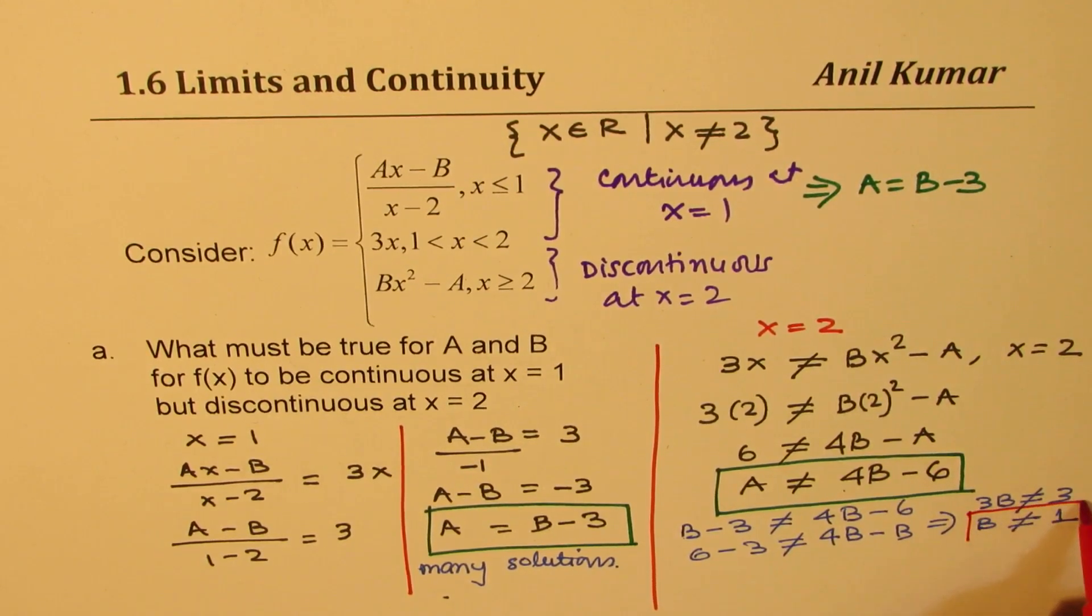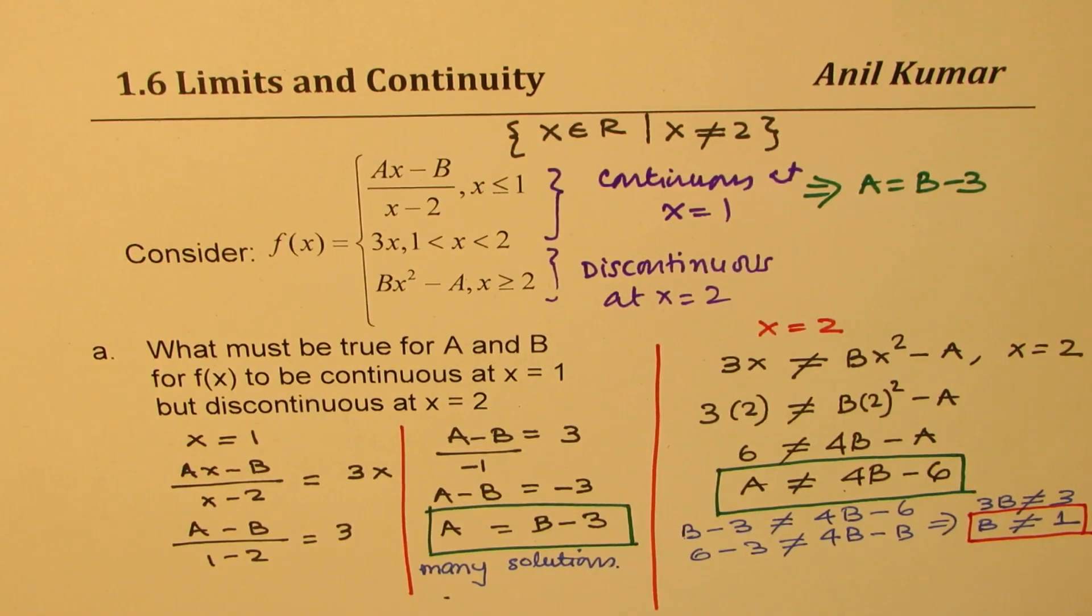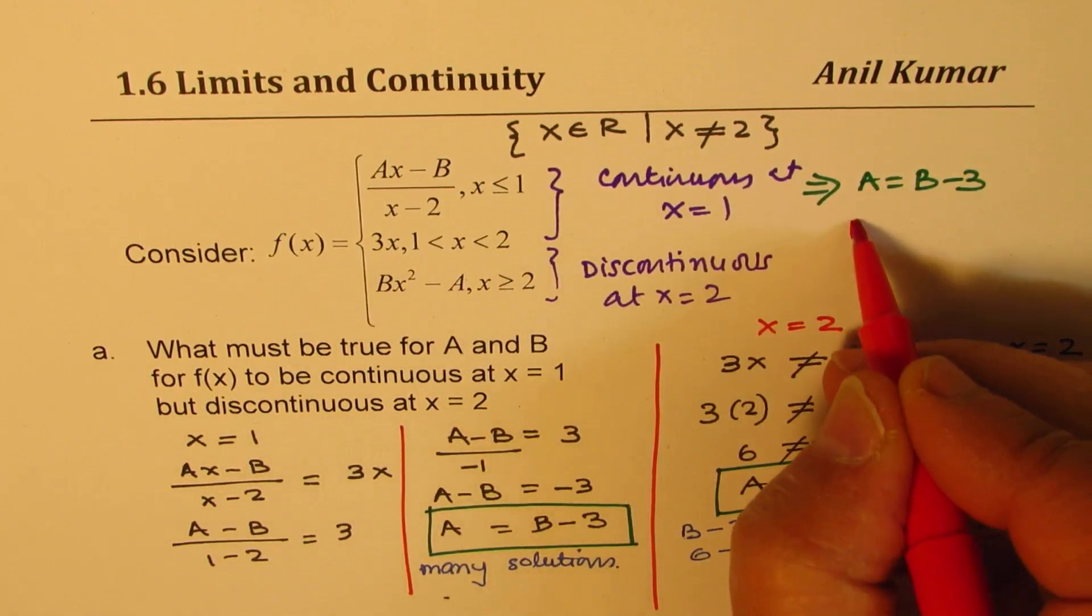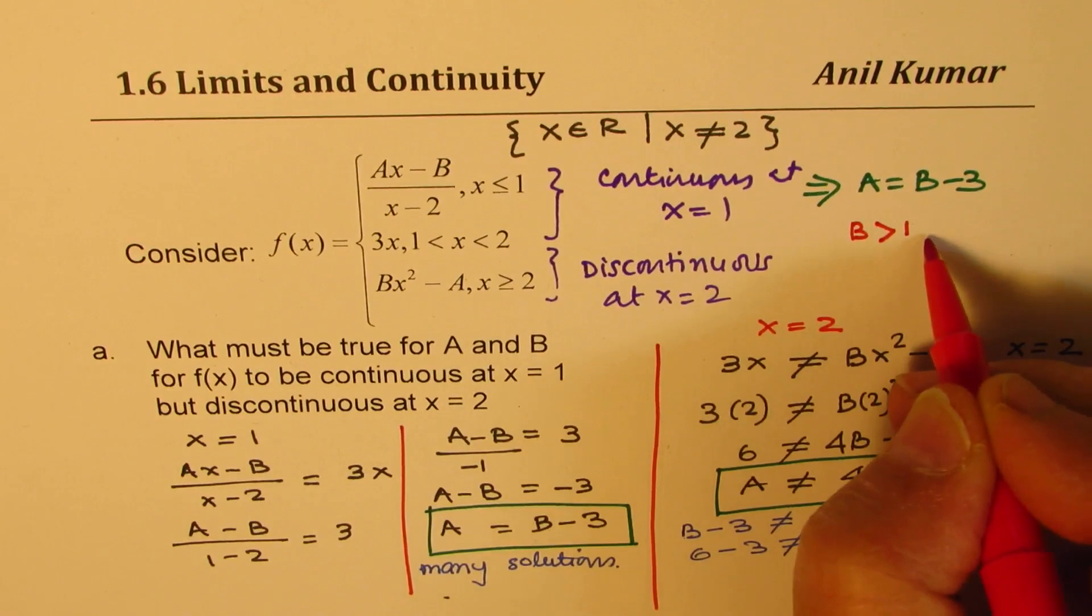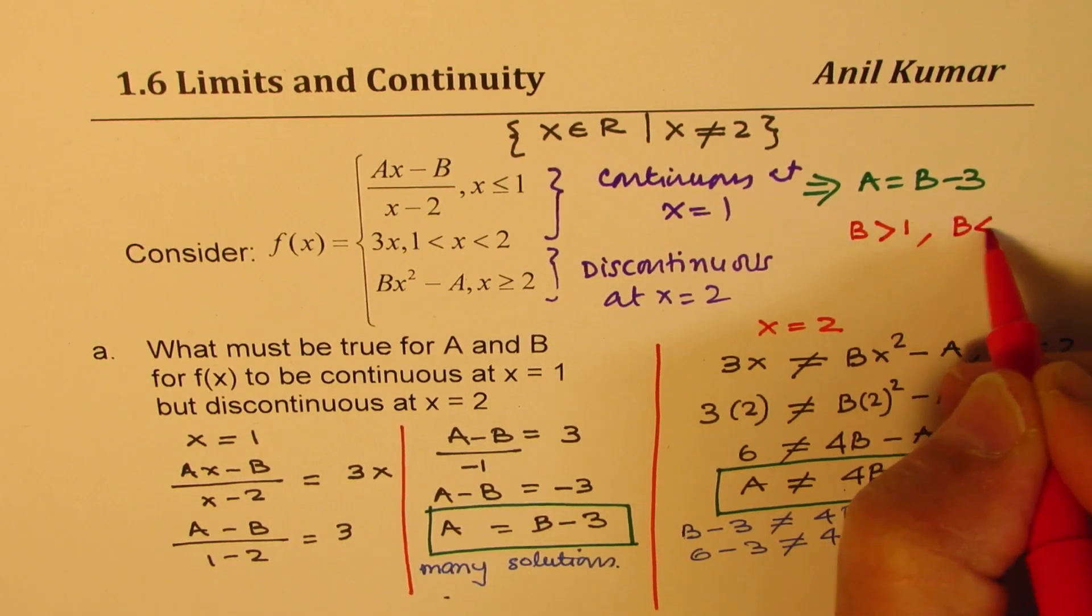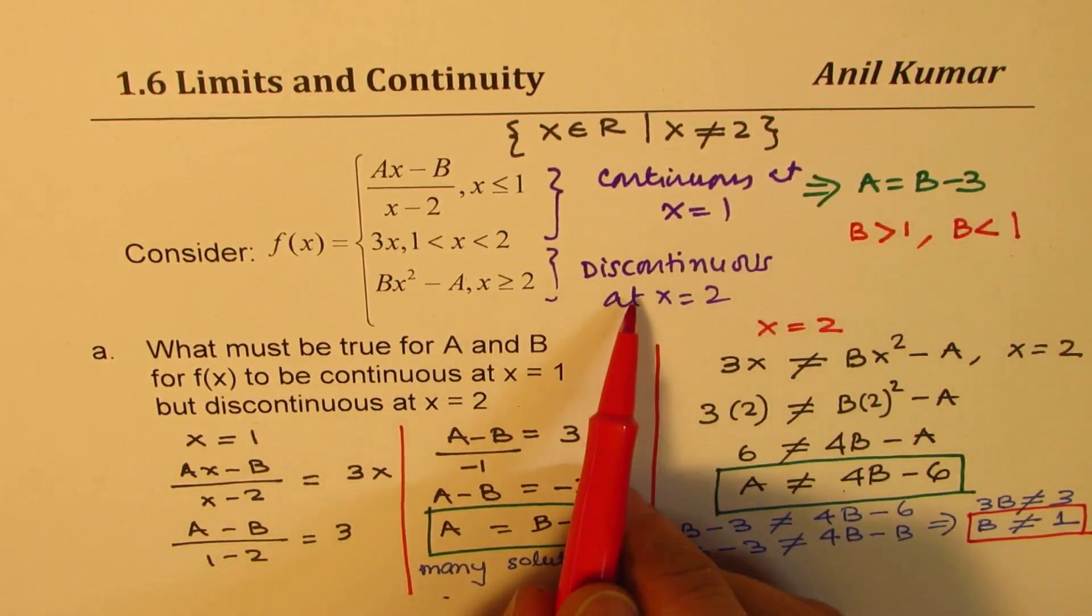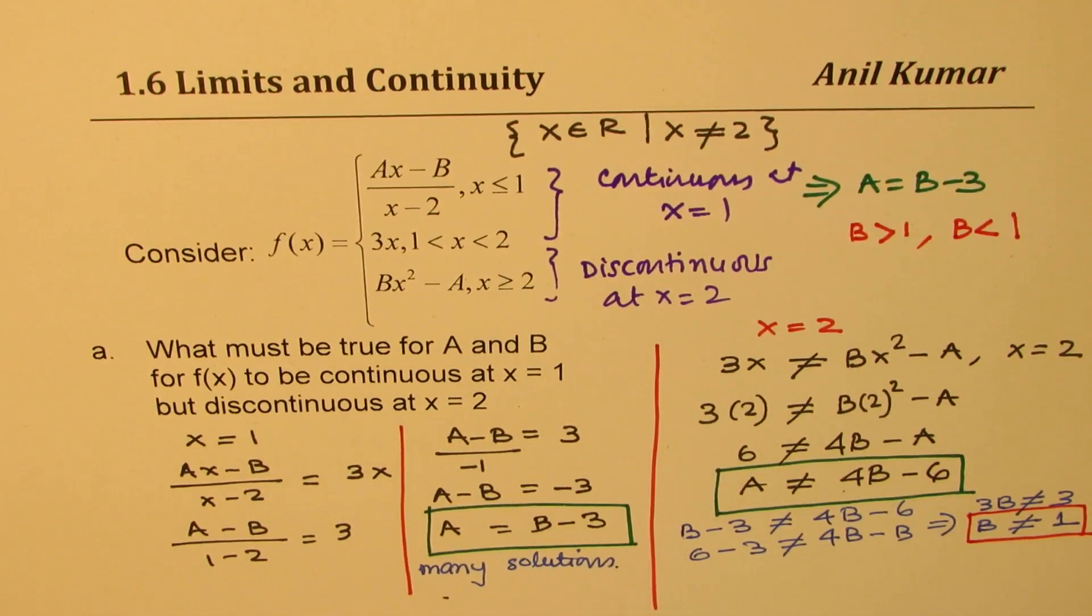Placing these two things right, so let's call this condition that B is not equal to 1. So if B is not 1, then we could have B which is greater than 1 or we have B which is less than 1. In that case the function is discontinuous. And A equals B minus 3.